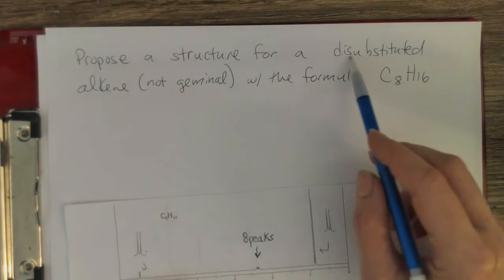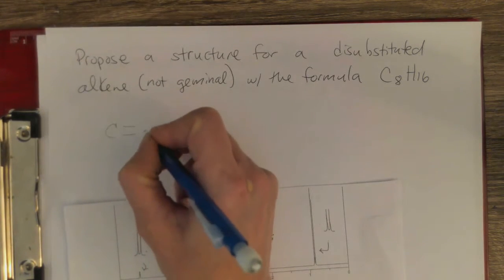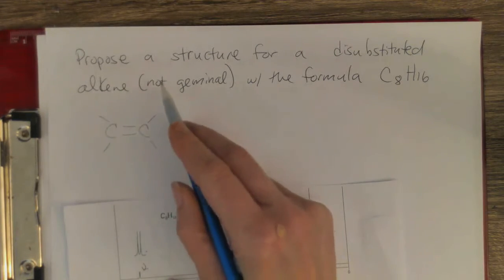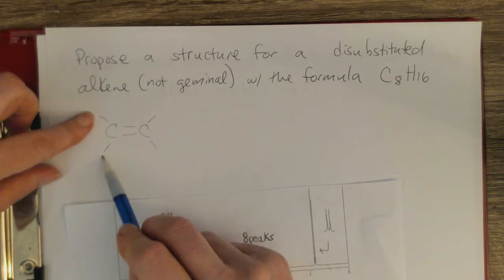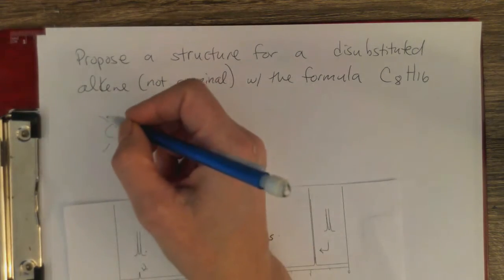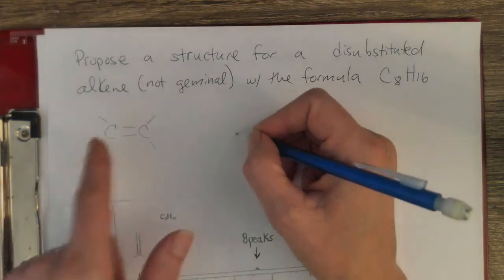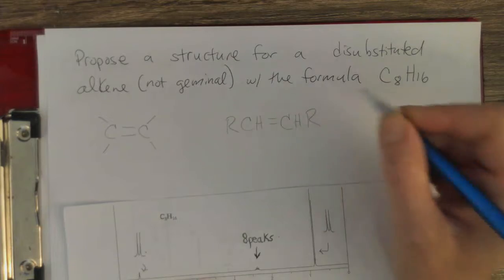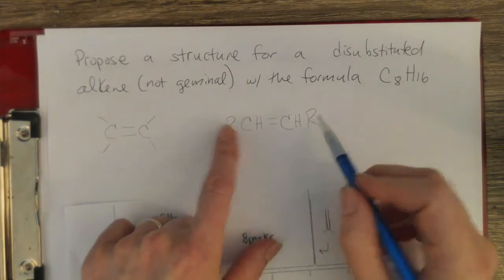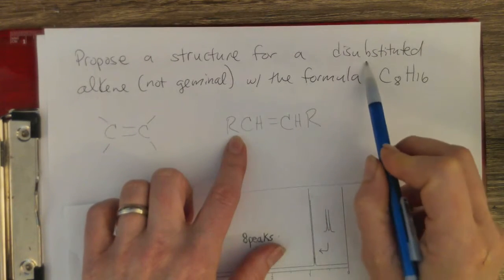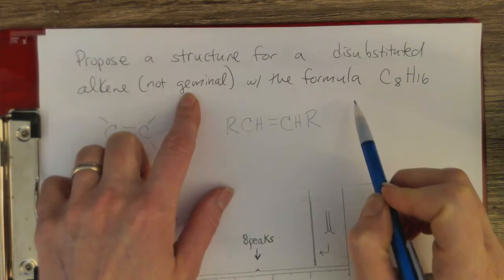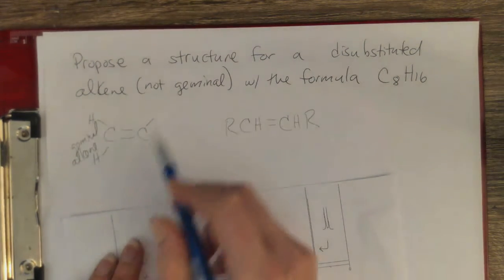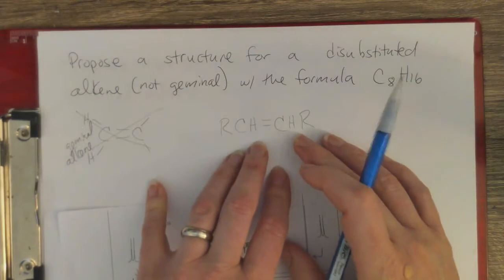Let's review what a disubstituted alkene is. We have our alkene carbon-carbon double bond, and if it's disubstituted but not geminal — geminal means two hydrogens on the same carbon — then we have R groups. I can't draw cis or trans yet since I don't know, where R represents alkyl groups. This would be an example of a disubstituted alkene that's not geminal, as opposed to a geminal alkene, which is what we don't have.